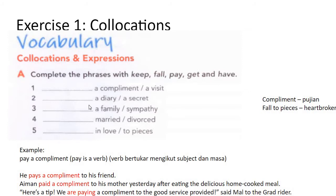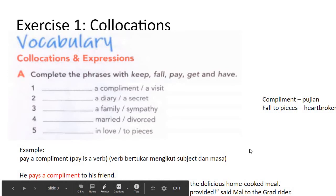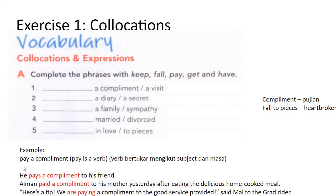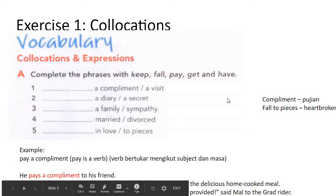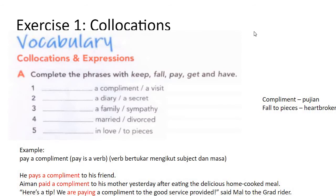I'll give you the answers for exercise one so they help you answer exercises two and three. Write this in your writing book. Example: 'He pays a compliment to his friend' — pays changes to paid in past tense. 'Aiman paid a compliment to his mother yesterday.' The answers: number one — pay a compliment, pay a visit; number two — keep a diary, keep a secret.